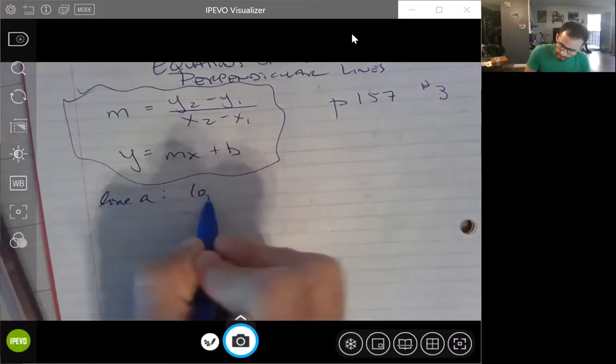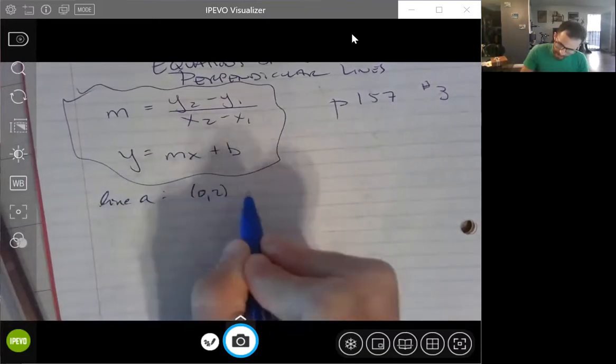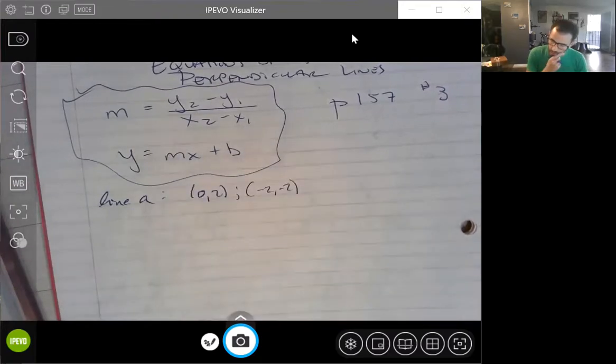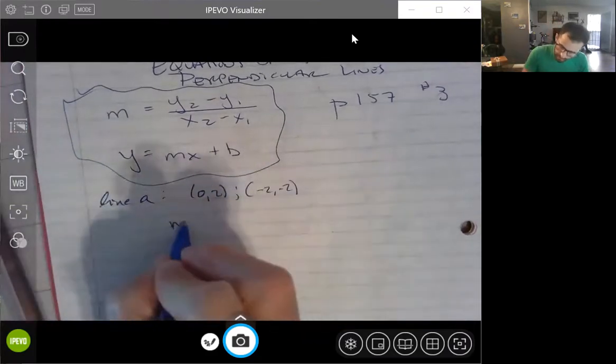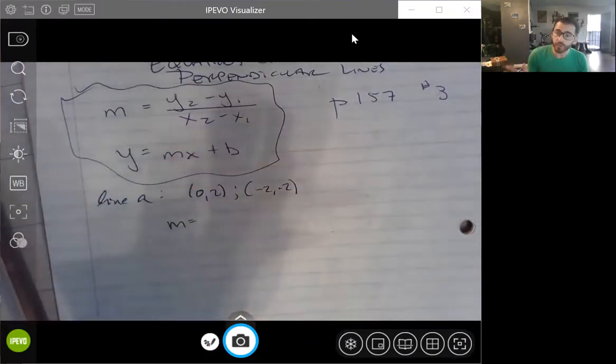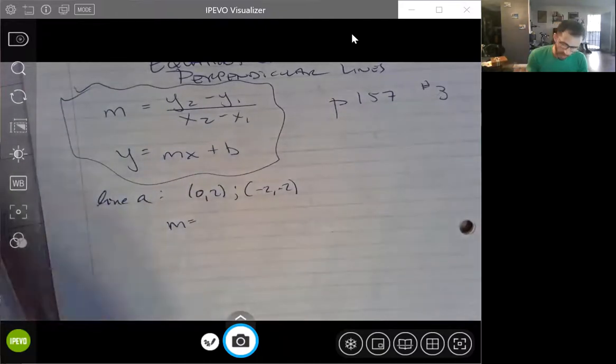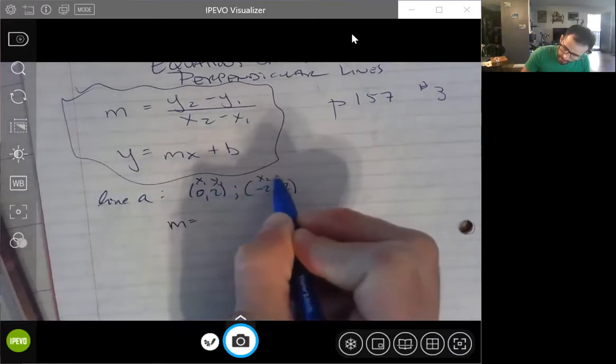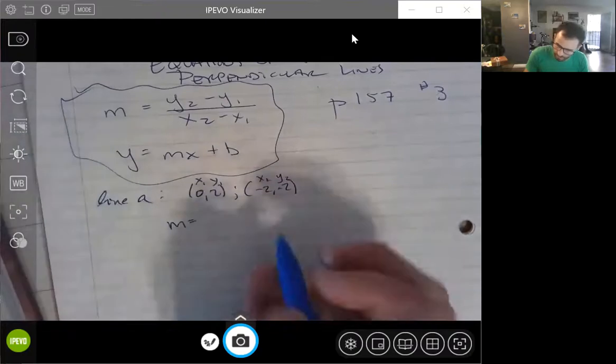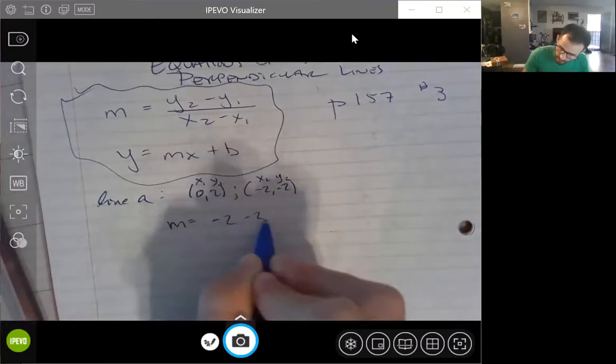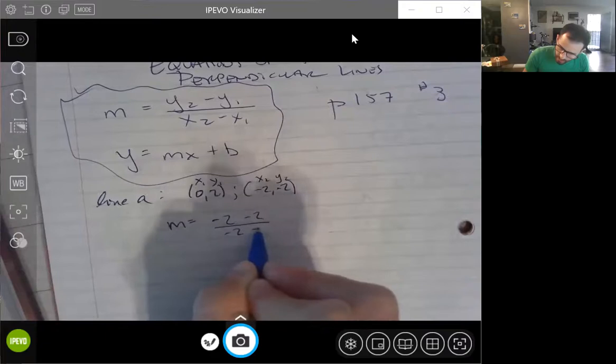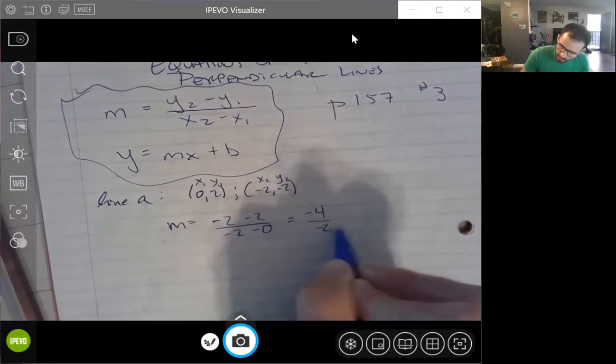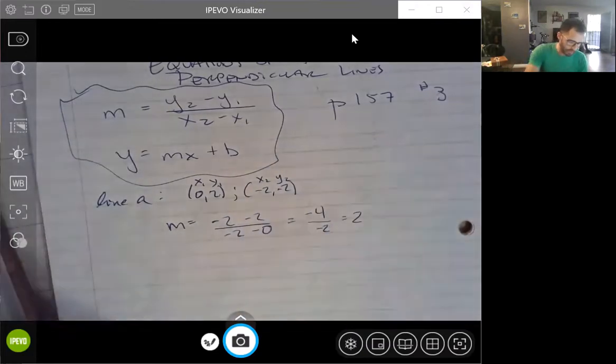We know that there is a point at (0, 2) and a point at (-2, -2). So let's find the slope, the slope for line A. Doesn't matter which one you use for y1 or y2. I'm going to kind of just go through in order because math makes sense. This will be my first point. This will be my second point. So y2 minus y1 over x2 minus x1. And we can say that the slope is -4 over -2, which comes out to positive 2. We'll save that for later.